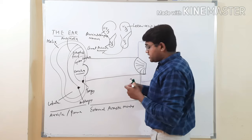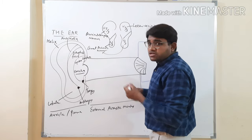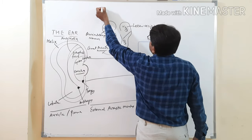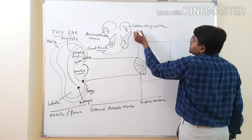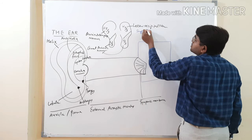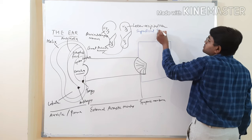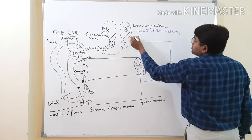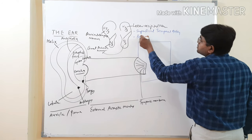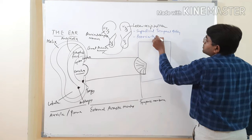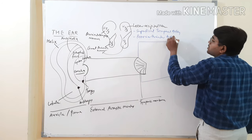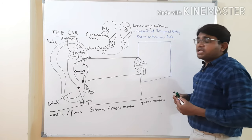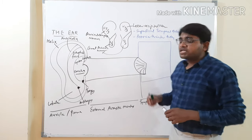Two arteries supply the external ear: the superficial temporal artery and the posterior auricular artery.